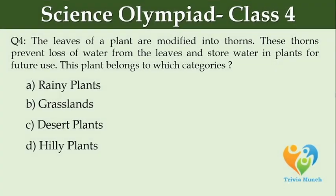The leaves of a plant are modified into thorns. These thorns prevent loss of water from the leaves and store water in plants for future use. This plant belongs to which category? Option A: rainy plants. Option B: grasslands. Option C: desert plants. Option D: hilly plants.